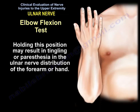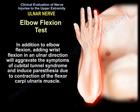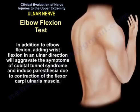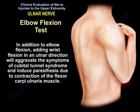Holding this position may result in tingling or paresthesia in the ulnar distribution of the forearm or hand. In addition to elbow flexion, adding wrist flexion in an ulnar direction will aggravate the symptoms of cubital tunnel syndrome and induce paresthesia due to contraction of the flexor carpi ulnaris muscle.